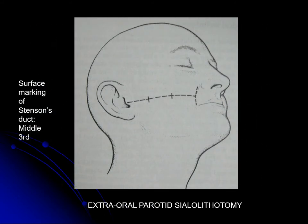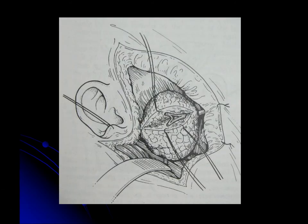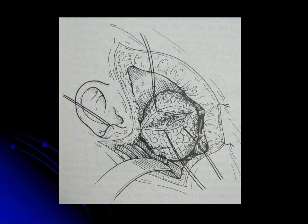For external parotid surgery, the incision line for parotidectomy runs from between the earlobe and the corner of the ear, going into the midline and toward the external auditory meatus. When performing external parotid surgery, important structures including the facial nerve, parotid capsule, and vessels must be carefully preserved. If the stone is inside the parotid gland, external approach is used; if it is in the ductal region, an intraoral approach is preferred.